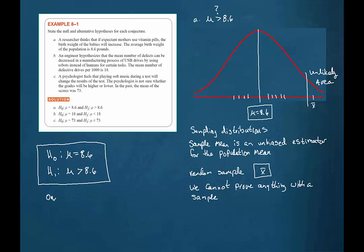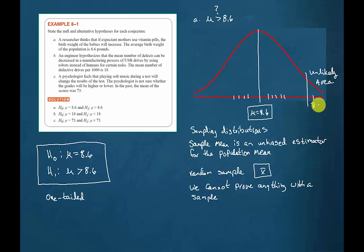Note that this is a one-tailed test because we don't care about what's to the left. When we're trying to answer a question about whether or not the population mean is greater than 8.6, all we care about is what's to the right. Since we're using a sample to draw this conclusion, we would only be willing to reject that the mean is equal to 8.6 and conclude that it's actually greater than 8.6 if we landed significantly greater than this assumed population mean.